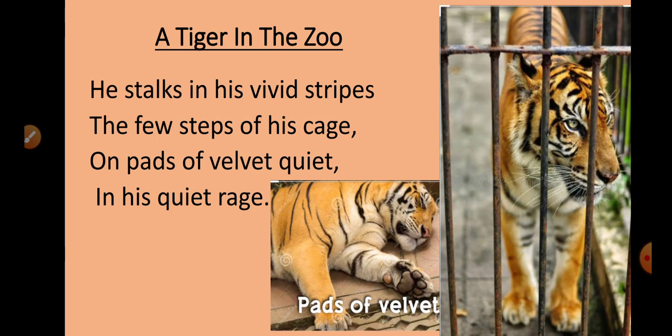On pads of velvet quiet — the pads are the paws of the tiger. You can see the tiger in the picture where he is sleeping; the paws are very soft, that is why they are compared to velvet. Velvet is a fabric which is very soft. So he walks on his soft paws with his brightly colored stripes.